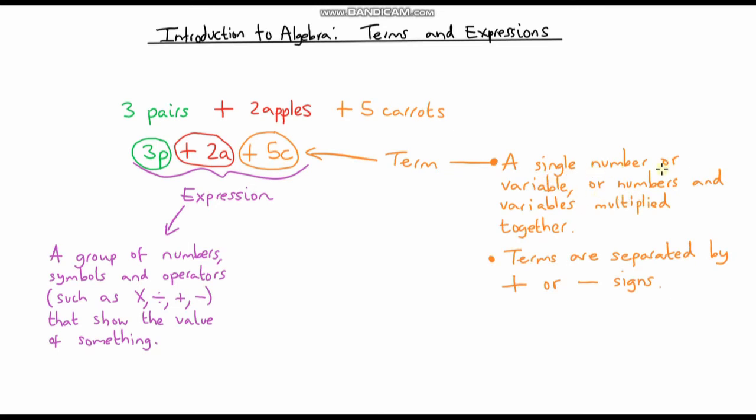A term is a single number or variable, or numbers and variables multiplied together. They're always separated by plus or minus signs.